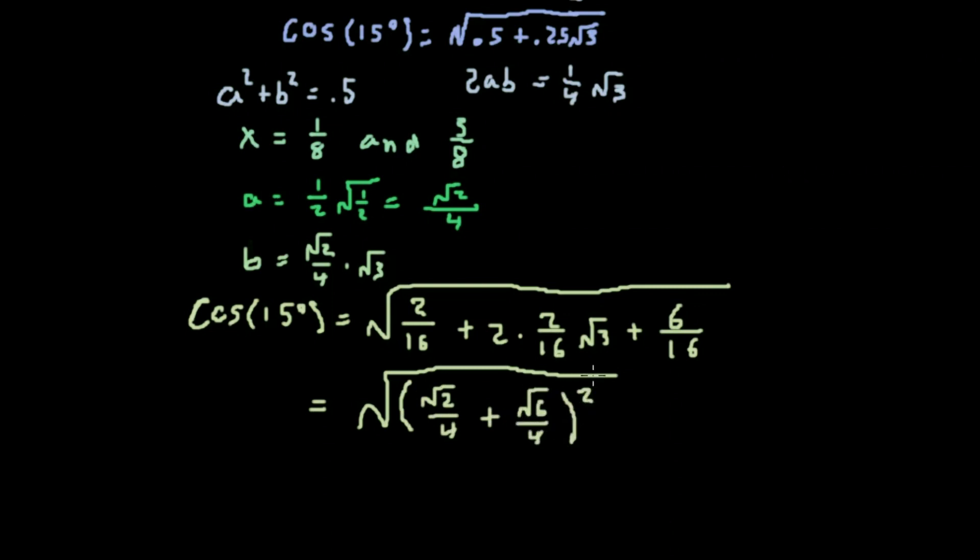Now we get a square and a square root. Those cross out, leaving us with the cosine equal to the square root of 2 plus square root of 6 over 4.